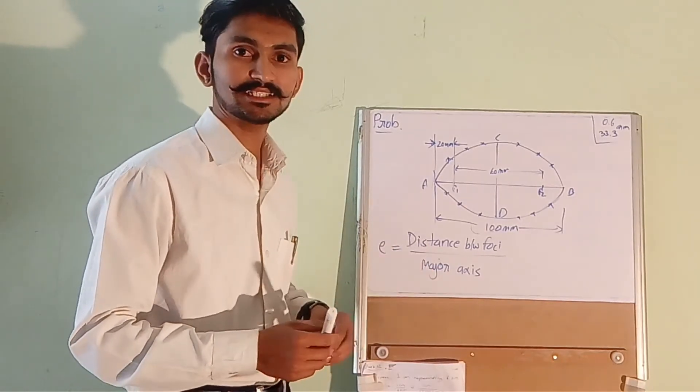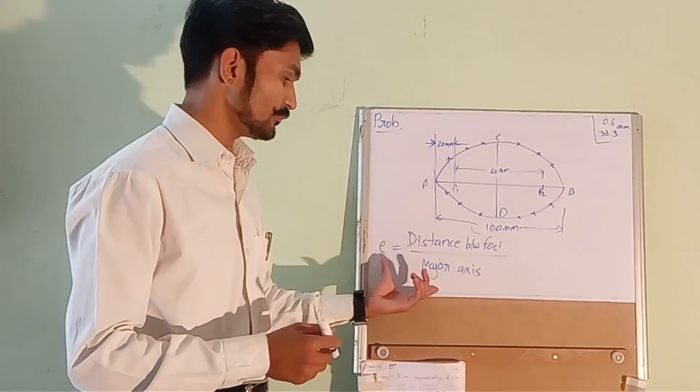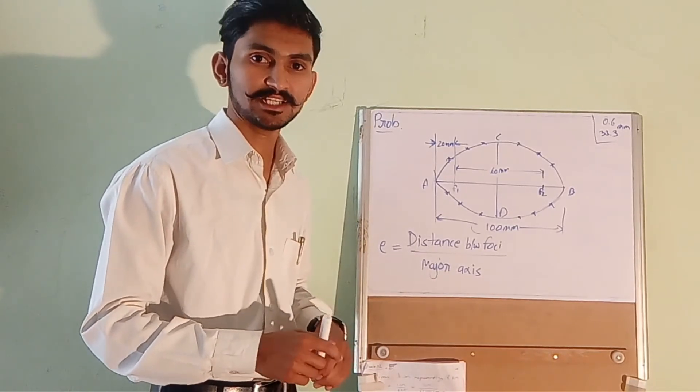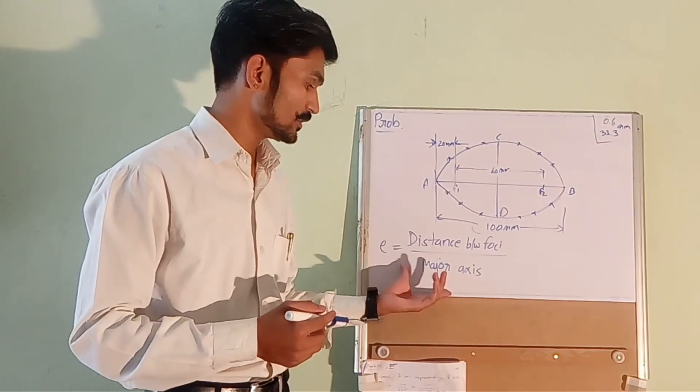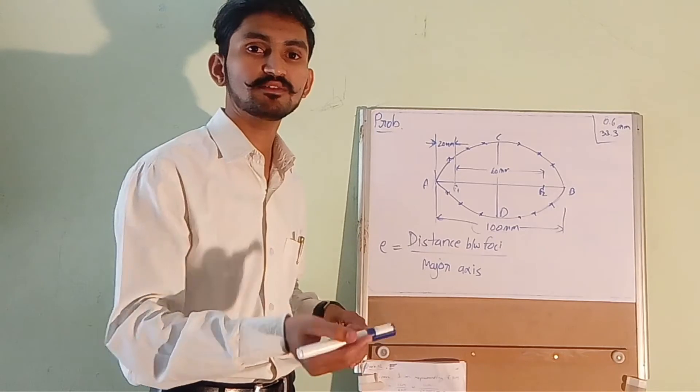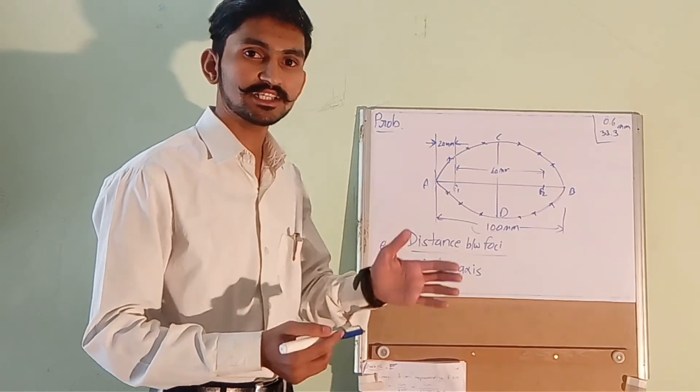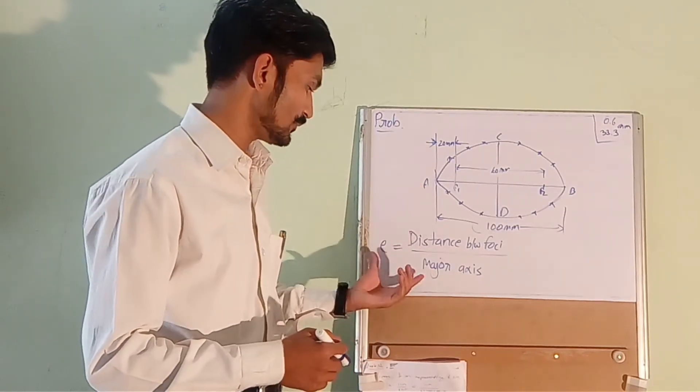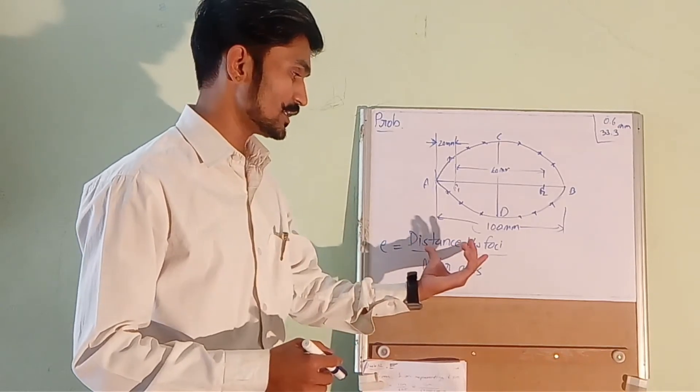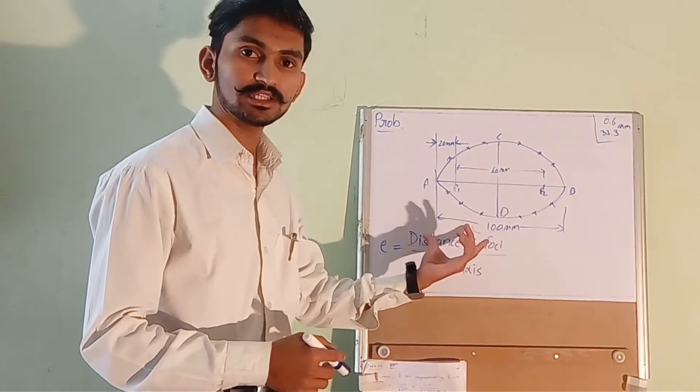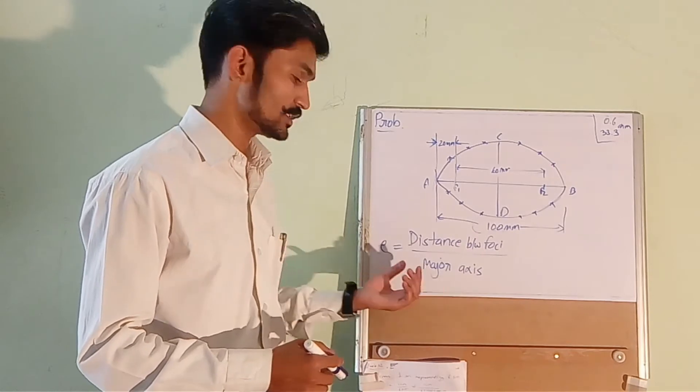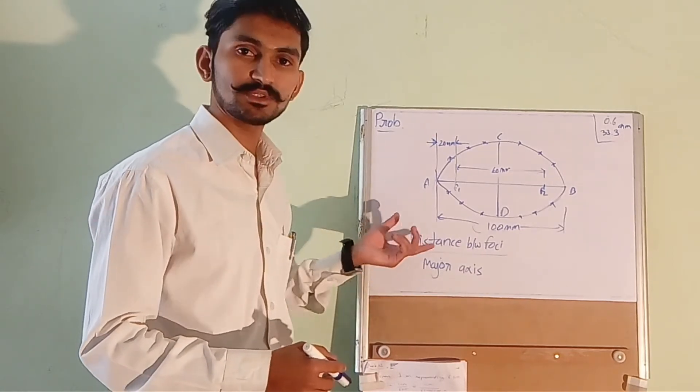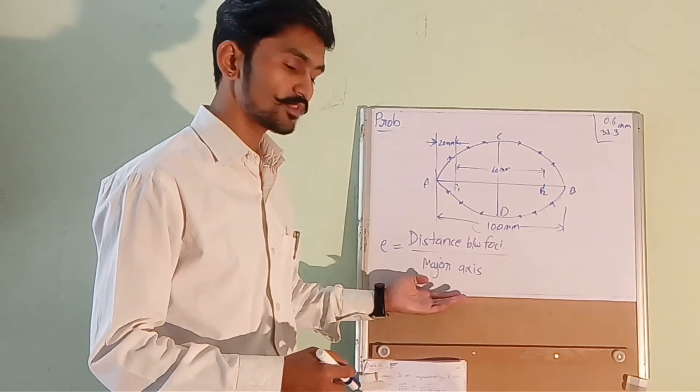Now we have to calculate the eccentricity first because we have two formulas for calculating eccentricity. One will get us the value of eccentricity and another formula will help us to get the distance of the directrices from point A. So the first is distance between the foci divided by the major axis. Eccentricity equals distance between foci divided by major axis.